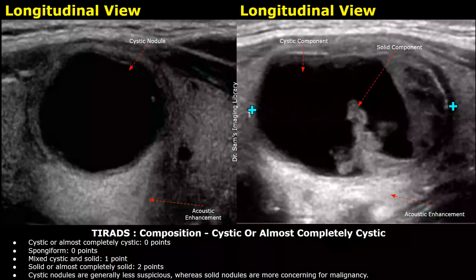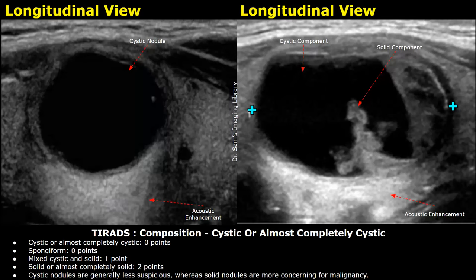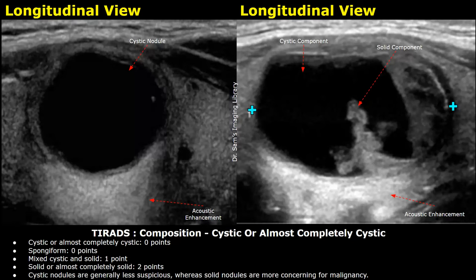Hello everyone, this is Dr. Sam and this video is about ACR TI-RADS classification of thyroid nodules on ultrasound. TI-RADS stands for Thyroid Imaging Reporting and Data System. It is a diagnostic tool for evaluating thyroid nodules using ultrasound, developed by the American College of Radiology. It has a scoring system where points are based on the severity of the features.